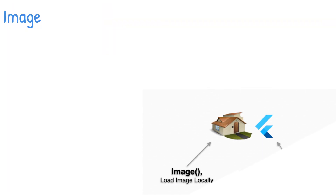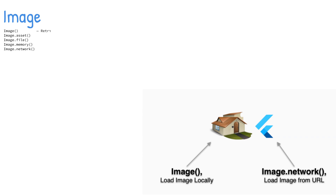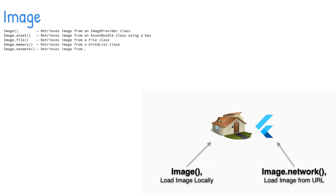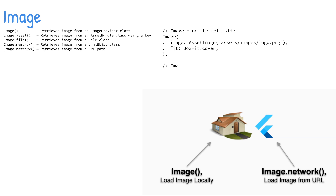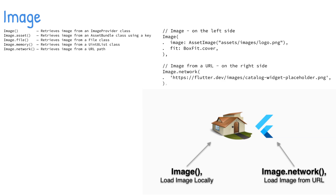The image widget displays an image from a local or URL source. To load an image widget, there are a few different constructors to use. Image retrieves an image from an image provider class. ImageAsset retrieves an image from an asset bundle class using a key. ImageFile retrieves an image from a file class.